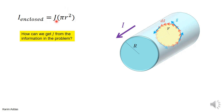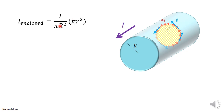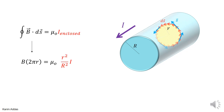We can express J in terms of the total current: the total current I passes through the full cross-sectional area πR², so J = I / (πR²). Substituting this back, the enclosed current becomes I × (πr²) / (πR²), and the π cancels to give I_enclosed = I × (r² / R²) — the ratio of the squares of the radii times the total current.